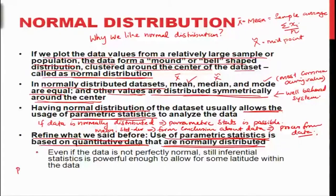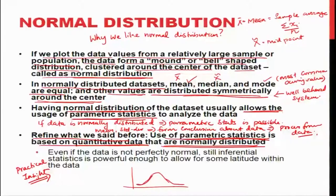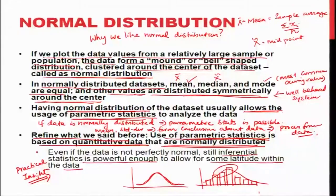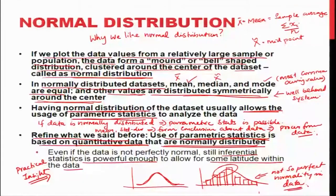A practical insight: even if the data is not perfectly normal — if the histogram is not a perfect bell shape — inferential or parametric statistics is powerful enough to allow some flexibility for those deviations. So even with imperfect normality in data, you can still use parametric statistics.